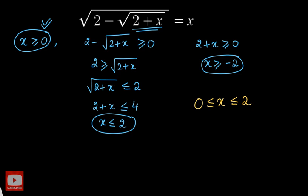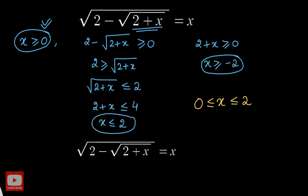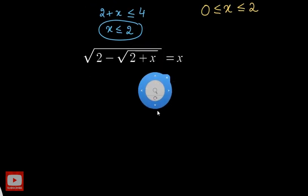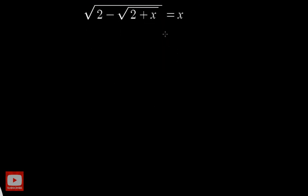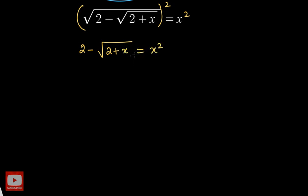Now let us proceed to solve the problem. The aim is to remove the radical symbol, so we square both sides of the equation. Squaring the left and right sides removes the outer radical, giving us: 2 minus square root of 2 plus x equals x squared.